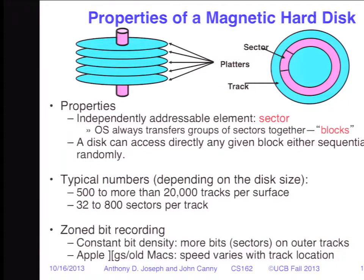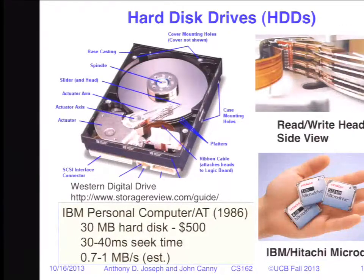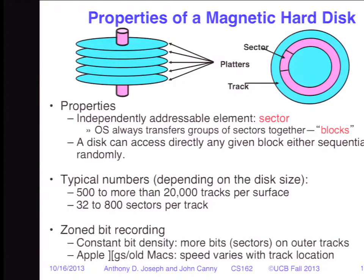We have a thin film head — the thing that floats above the drive and actually writes on it. On the bottom of the drive there's a large motor that spins the platters at high speed, and another large motor that moves the heads back and forth. We take each platter surface and divide it up into concentric rings called tracks. We take each track and divide it up into sectors — the sector is the smallest addressable unit on a drive. The OS groups sectors into blocks, which is the unit of transfer — one or more sectors.